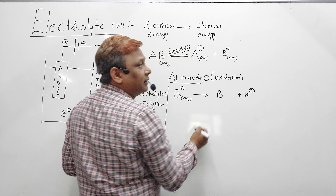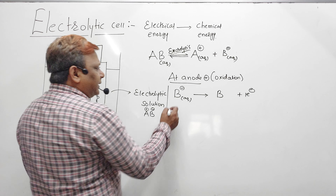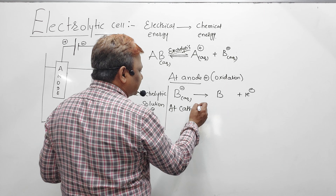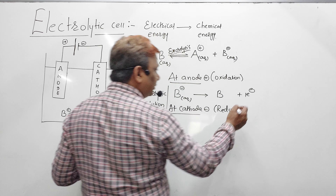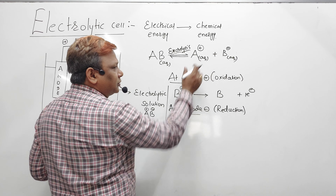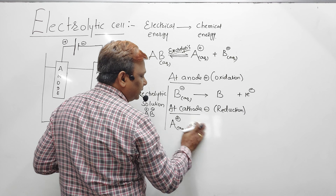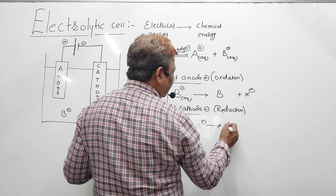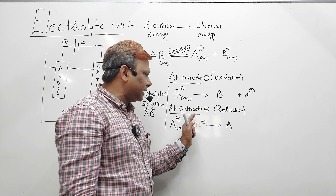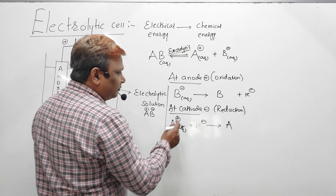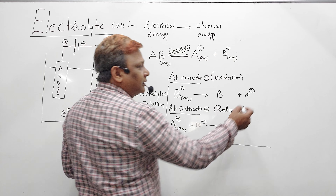At the anode, ions lose one electron and can be liberated as a gas or deposited as a solid depending on the reaction. At the cathode — which is negatively charged — reduction takes place. Positive ions gain electrons. The anode is the oxidation half-cell and the cathode is the reduction half-cell.